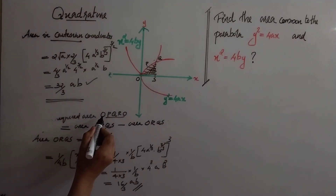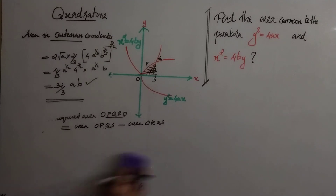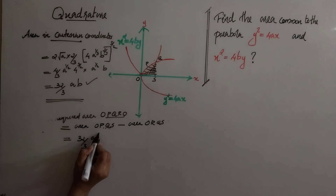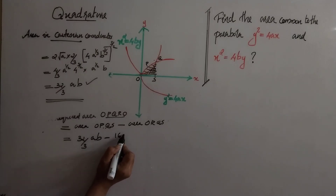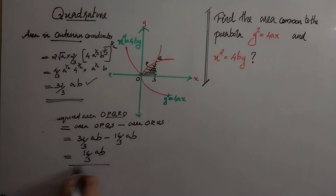The required area OPQRO = area OPQS − area ORQS = 32/3 · ab − 16/3 · ab = 16/3 · ab. This is the common area of the parabolas y² = 4ax and x² = 4by. Thank you.